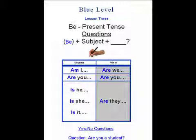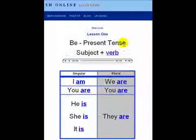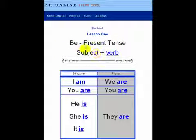We are going to take up today the verb be in the present tense in question form. When we did this lesson on the declarative sentences, you had the subject, the verb, and then the statement you wanted to make. As a review, we'll take a look at the verb be in the present tense — the subject and verb.